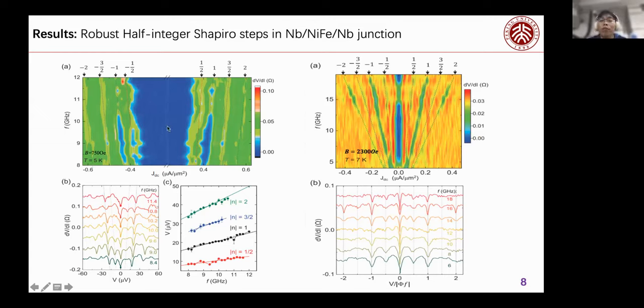You can see from these two phase diagrams, the dark blue region means the superconducting state. When the current increases, the superconducting state will be broken, and some steps will appear. We label them with numbers, and this number means the Shapiro steps. Also, you can see from the differential resistance figure, the valley means the voltage steps, and the relation between voltage and frequency shows the integer and half integer Shapiro steps.